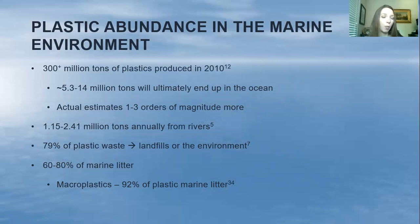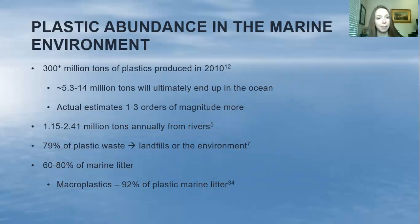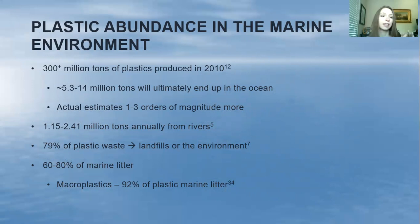1.15 to 2.4 million tons of plastics enter the marine environment annually from rivers. 79% of plastic waste ultimately ends up in landfills or the environment. 60 to 80% of marine litter is plastics, and of those plastics, 92% are macroplastics — things like plastic bags, plastic straws, plastic water bottles, and fishing gear.